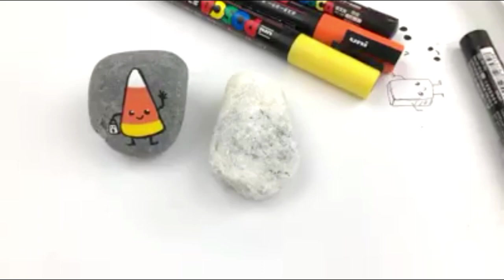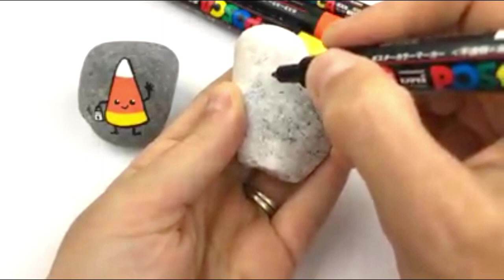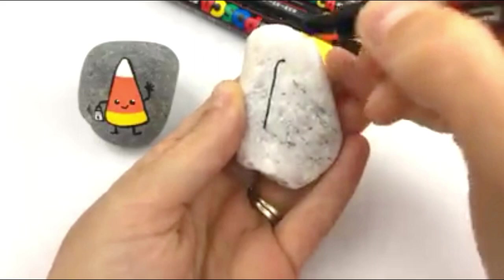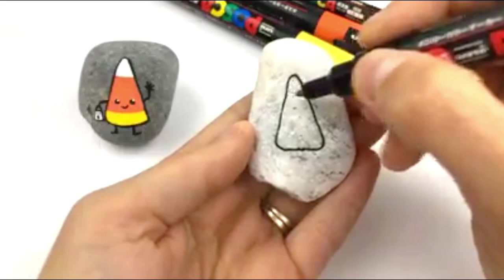So first thing we're going to do is start by just getting our basic shape onto our rock. Just a nice tall round edge triangle. Now I'm doing this one on a lighter rock. I did one on the darker rock. I just wanted to show kind of depending on what you've got. It will look good on anything. Just rounded edge. Now even though you don't see the dividing lines I'm going to go ahead and give myself guidelines just for filling in.